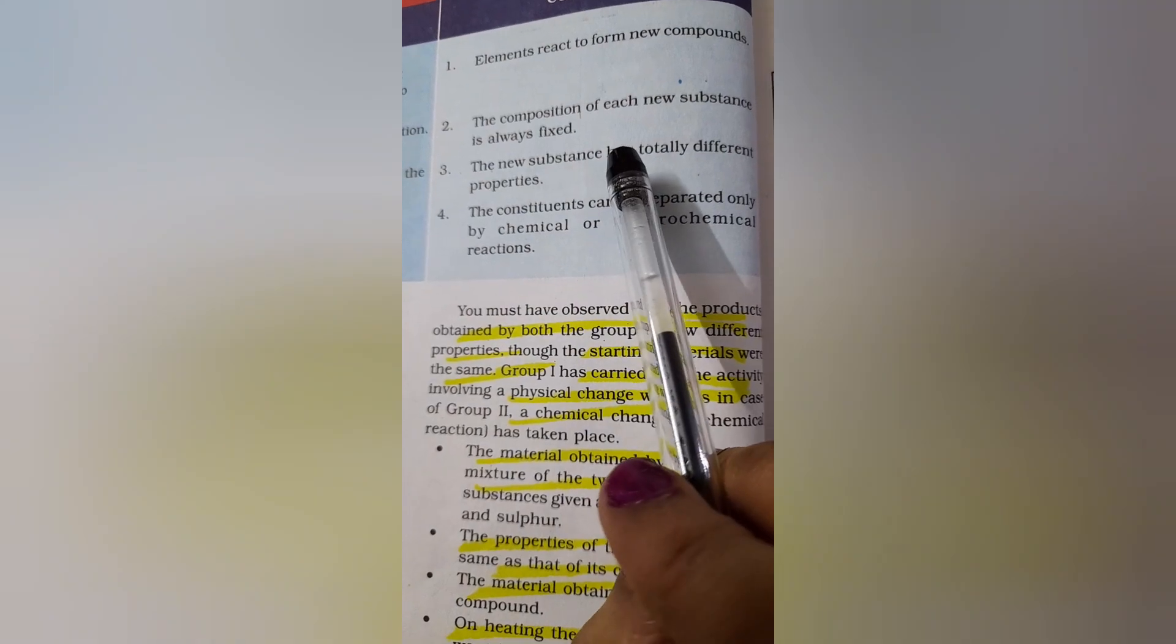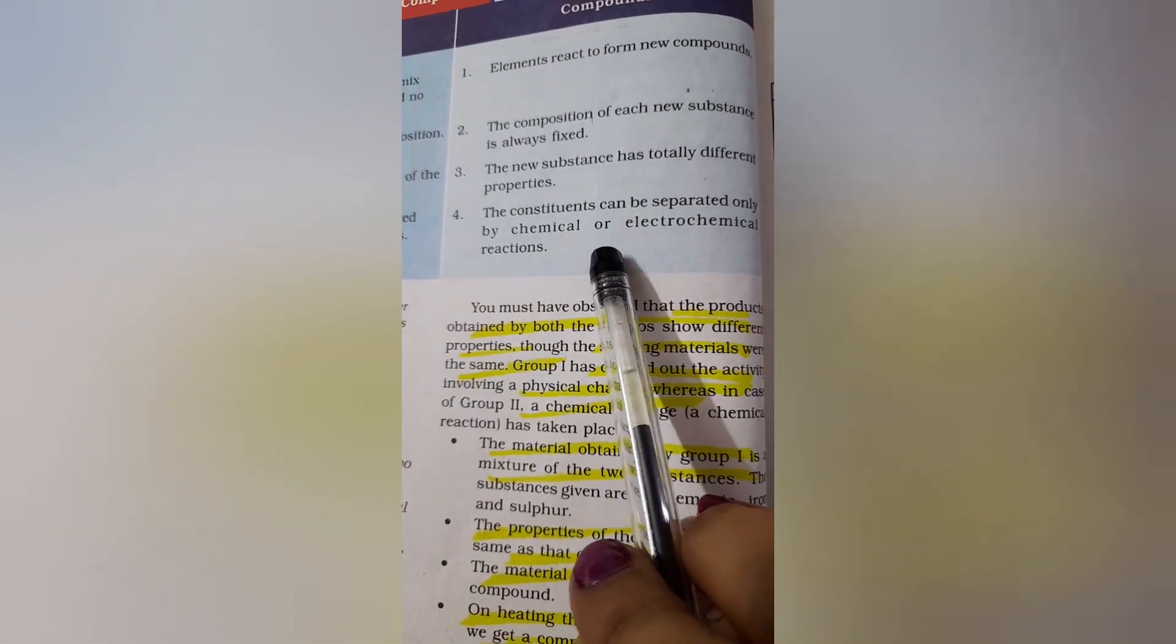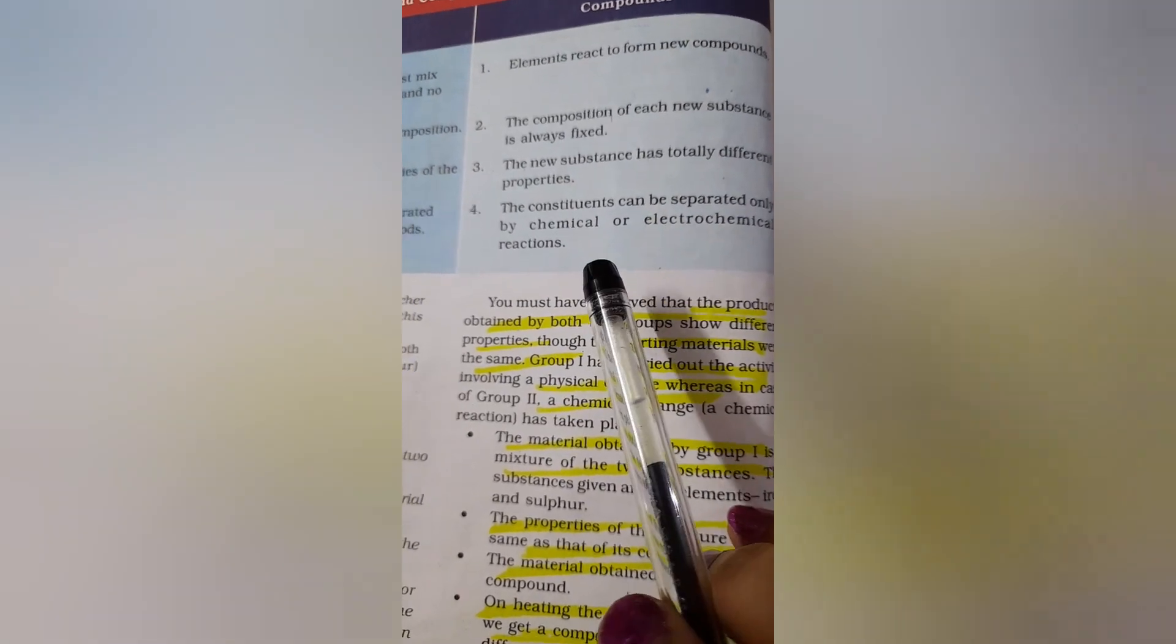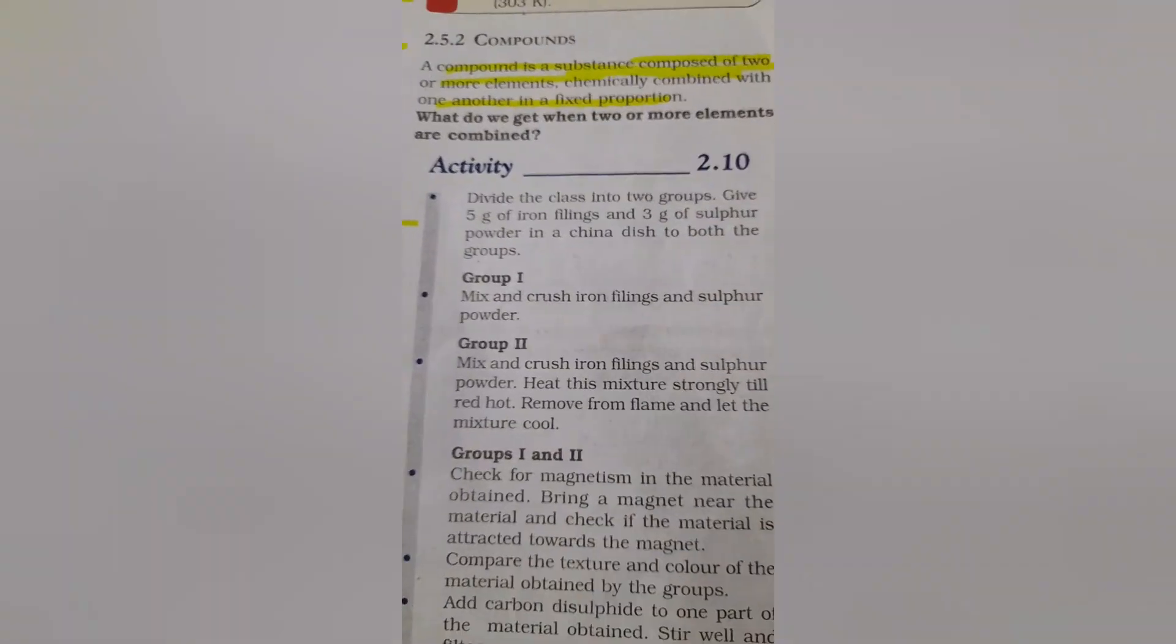The new substance formed is having totally different properties from the parent substance. You can separate the constituent only by chemical or electrochemical reaction. Now we will finish the lesson with a small activity here.